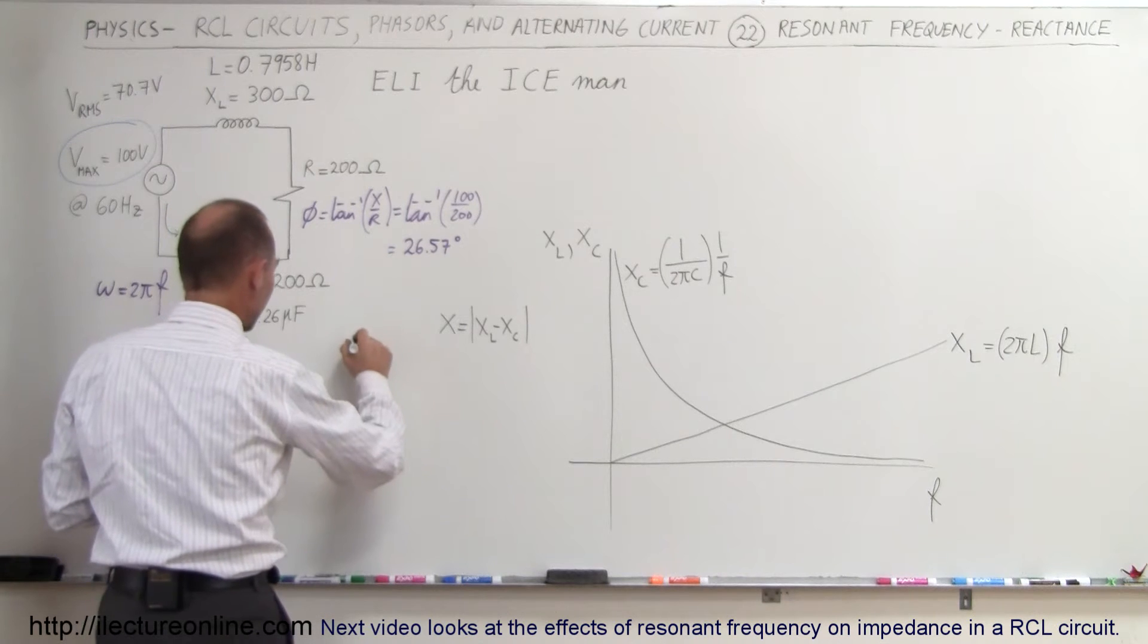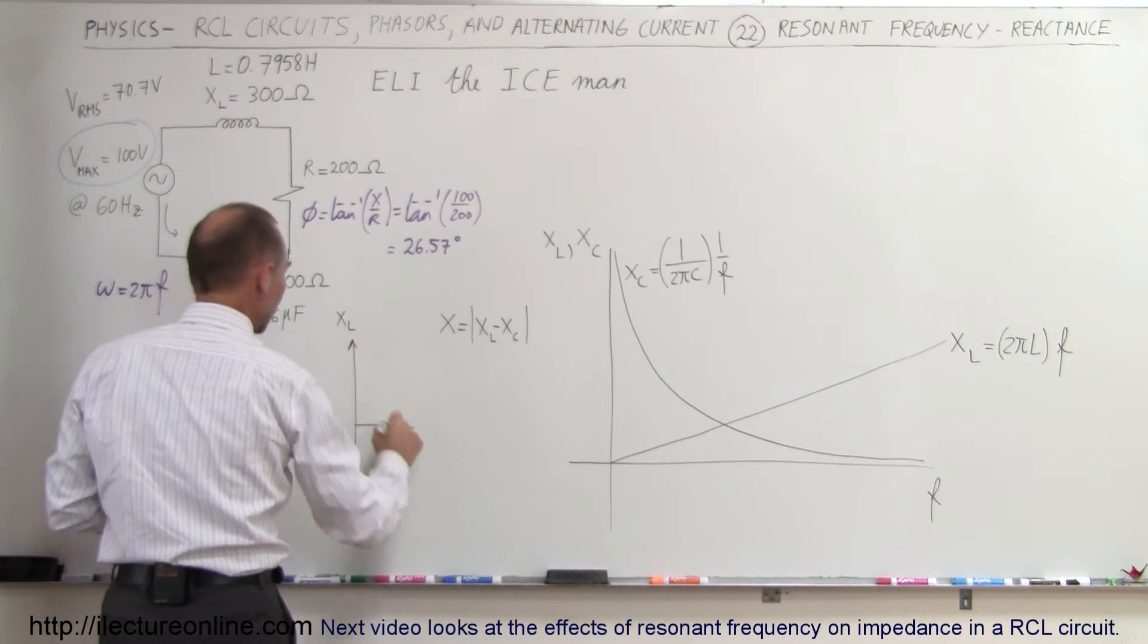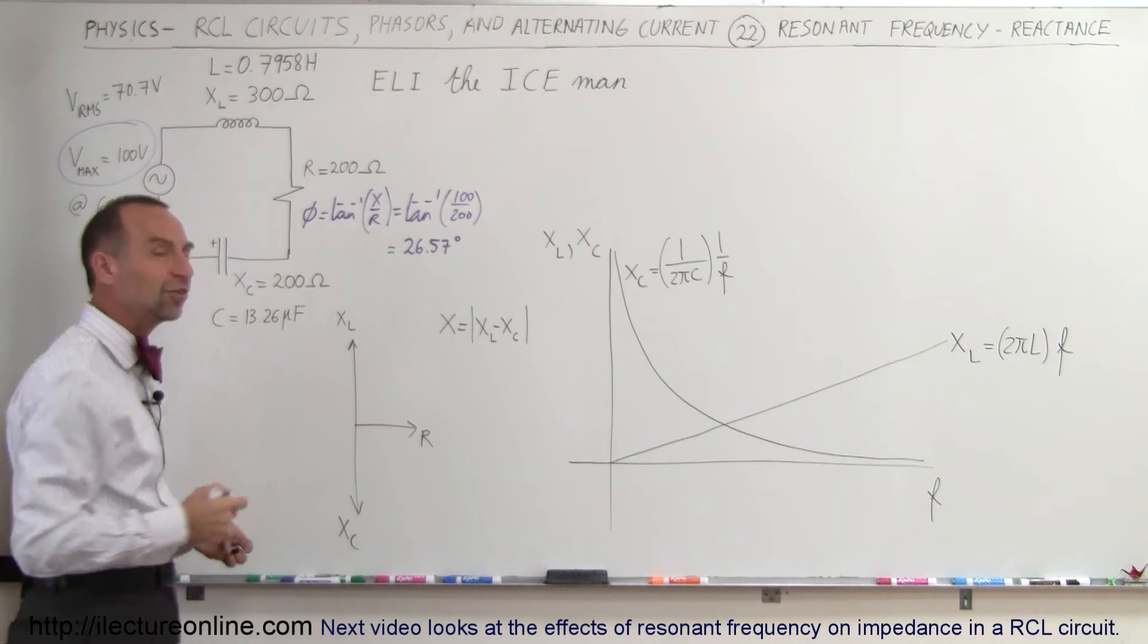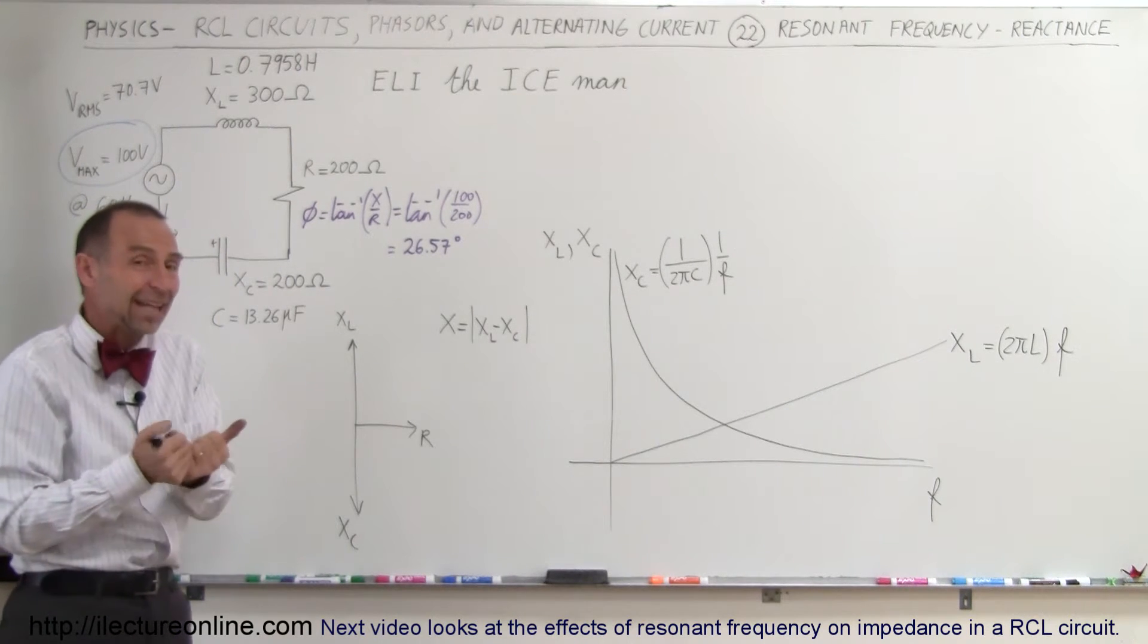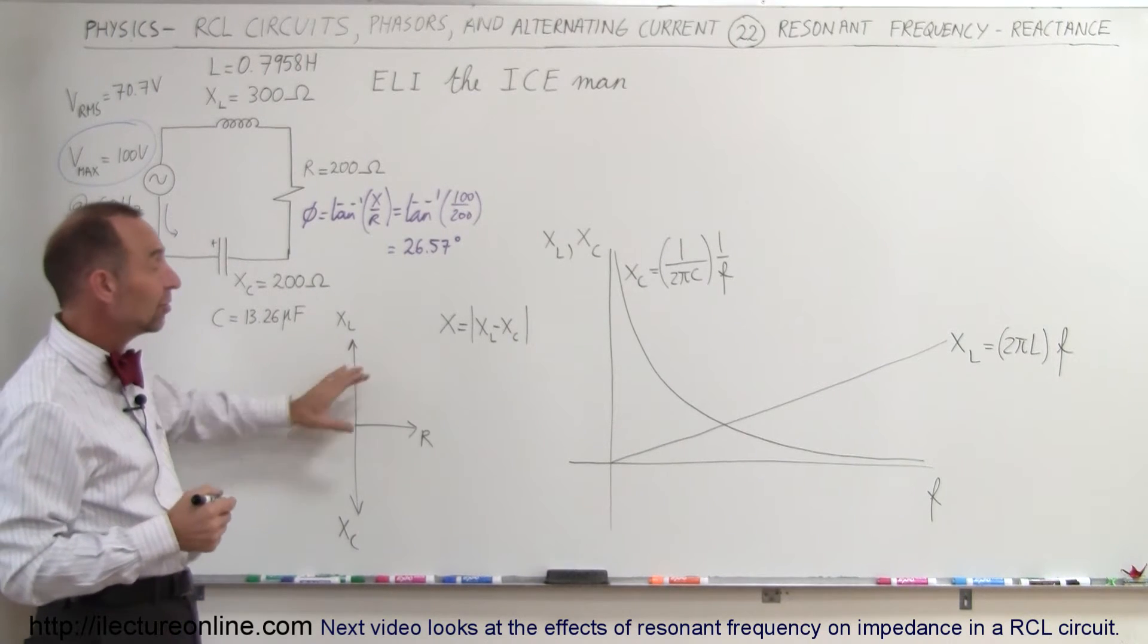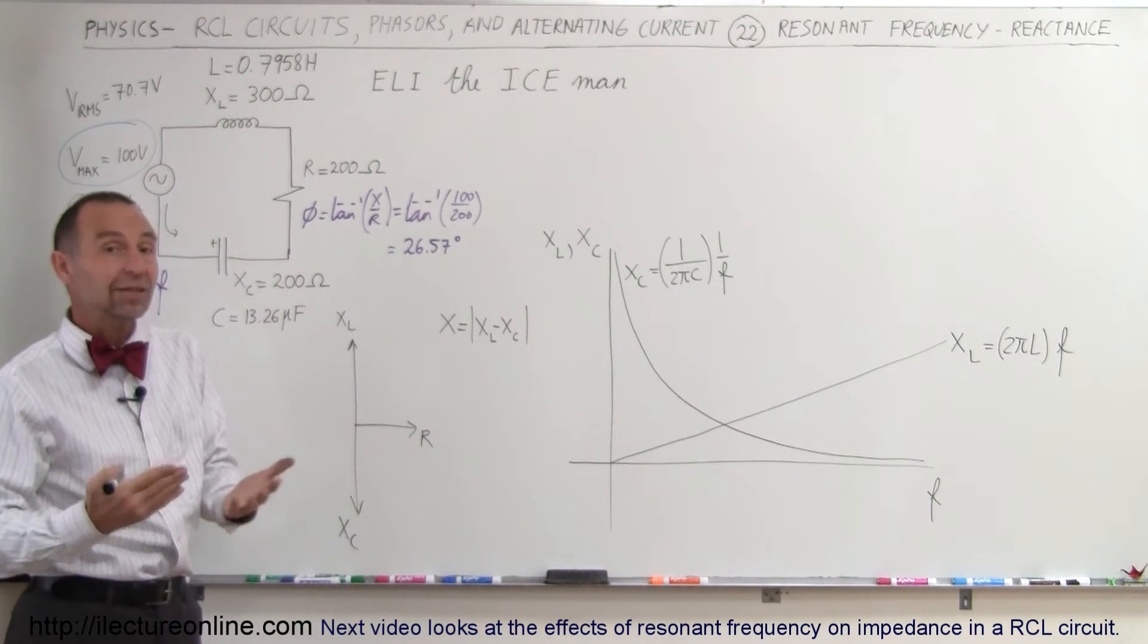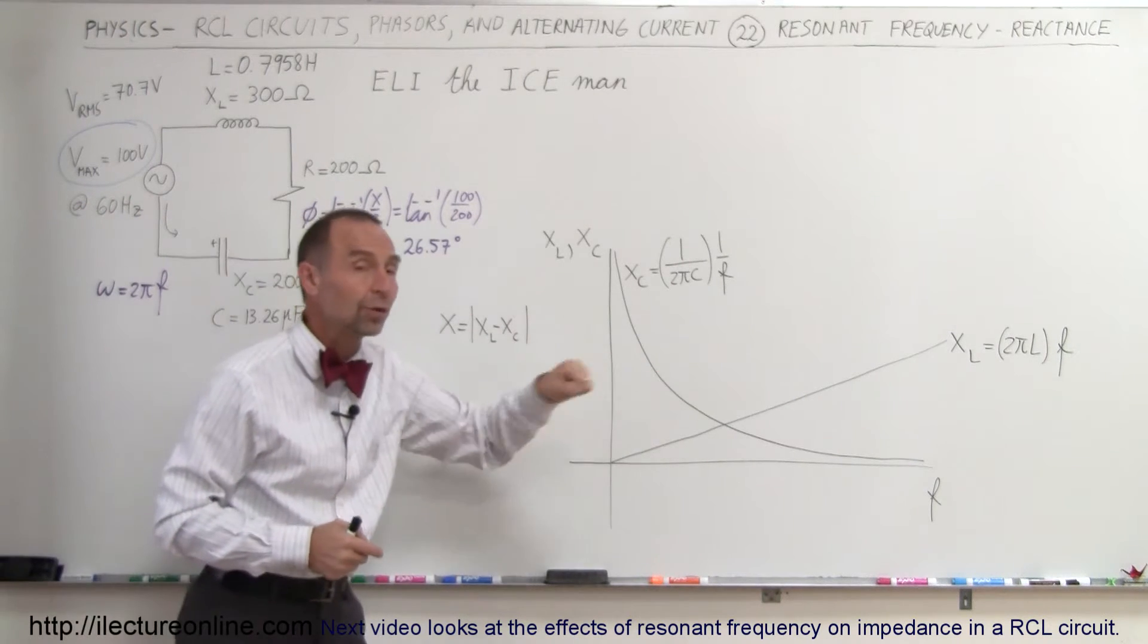When we draw the phase diagram, you can see that X sub L is drawn here, the resistance is drawn here, and the capacitive reactance X sub C is drawn here, so they're actually in opposition to one another. When we add the reactances together, we're basically adding the vectors together. Since they're in opposite directions, we subtract the two values. If they're equal in size, they actually cancel each other out. So the total reactance is the difference between those two values.